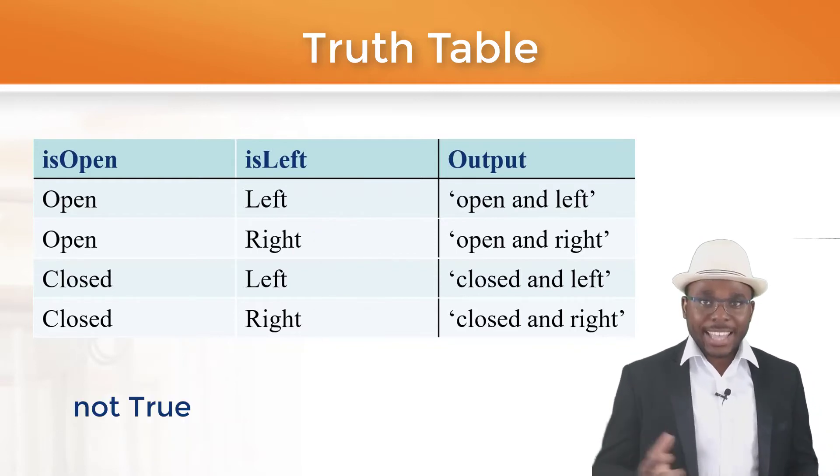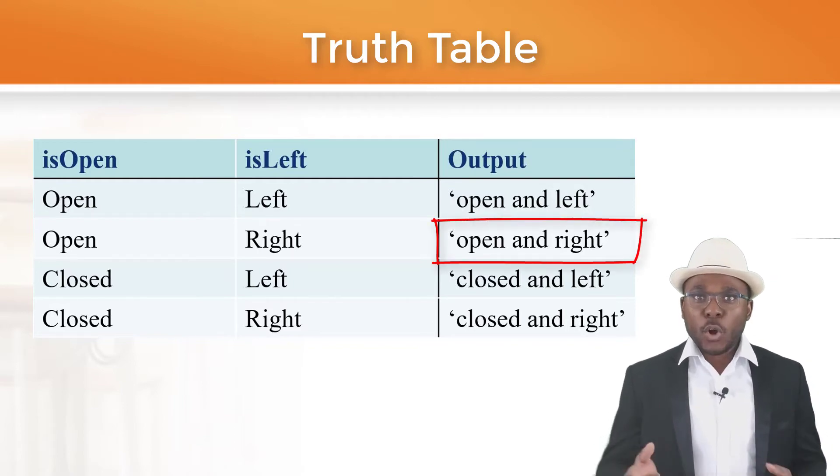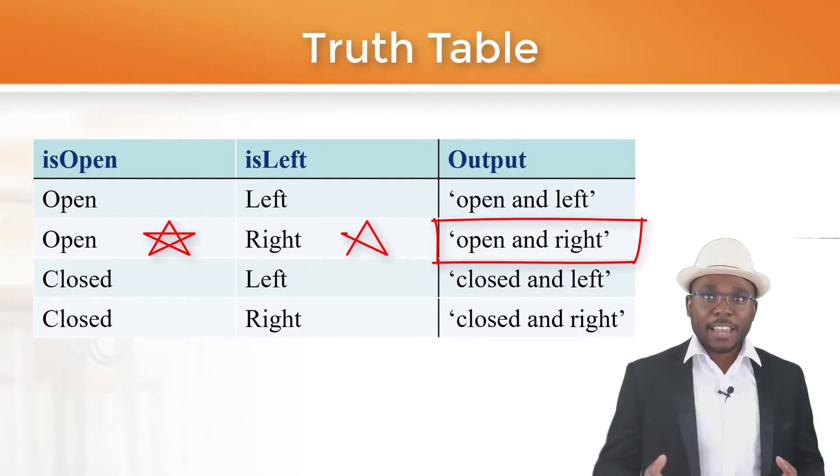If a condition is not true, then it's false. The output will be the string open and right, if is open is true and if left is false.